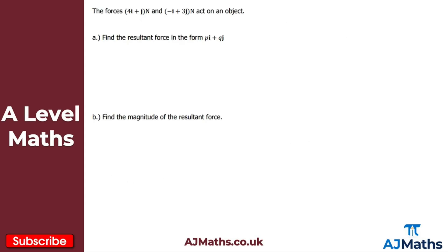For the first question, we have two forces acting on an object: 4i plus j newtons, and minus i plus 3j newtons. For part A, we're asked to find the resultant force in the form pi plus qj. Calling the resultant R, we add the i components separately: 4i plus minus i gives 3i.